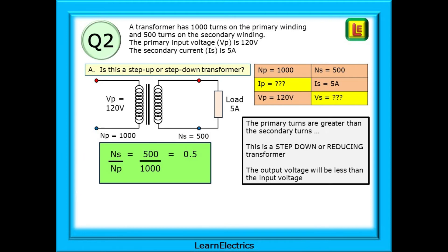Part A asks if this is a step up or a step down transformer. Very easy to answer. Look at the turns ratio. And here, we have both NP and NS. The primary turns are greater than the secondary turns, so this is a reducing transformer.